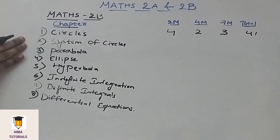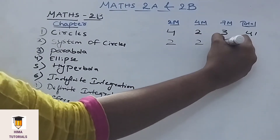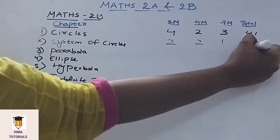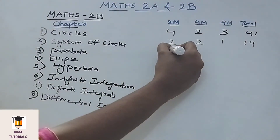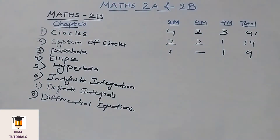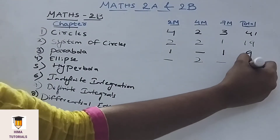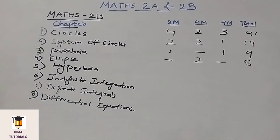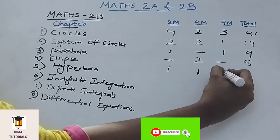Coming to the next chapter, System of Circles. In System of Circles, we get 2 two-mark questions, 2 four-mark, and 1 seven-mark. Coming to the next chapter, Parabola — in this chapter, we get 1 two-mark and 1 seven-mark question. In the Ellipse chapter, we get 2 four-mark questions. Coming to Hyperbola, we get 1 two-mark and 1 four-mark question.